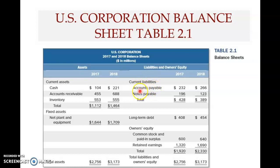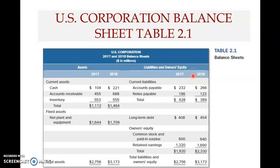Accounts payable refers to what the firm — US Corporation here — owes its suppliers. The company has purchased material from its suppliers but has not yet paid them. The figure here shows 266 million dollars was owed by the company to its suppliers at the end of the financial year 2018. The second item is notes payable, which are short-term debt obtained from creditors.